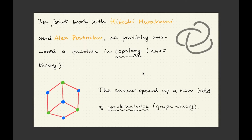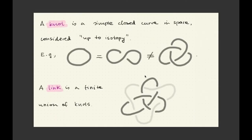If I have to summarize it really quickly, it starts with a problem in topology, more specifically in knot theory, which we partially managed to answer in joint work with Hitoshi Murakami and Alex Vosnikov. And while we were working on this problem, we managed to open up a whole new area of combinatorics, more specifically graph theory. So let me tell you a few of the details starting from the topological side of things.